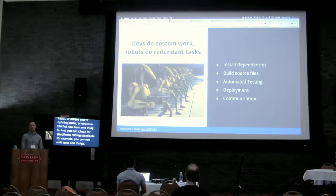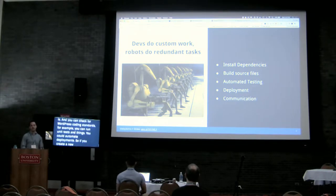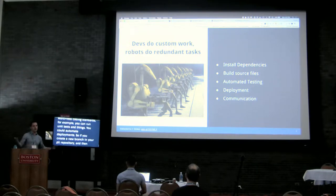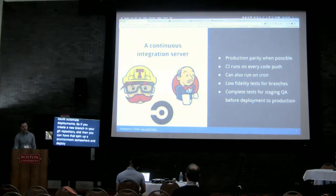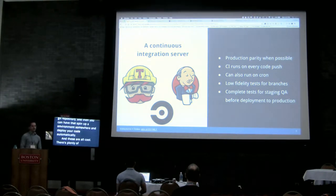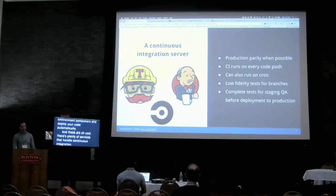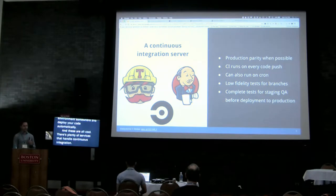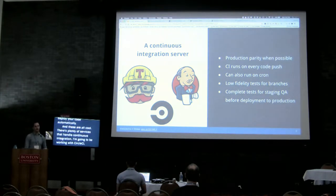You can run unit tests and things. You can also automate deployments — if you create a new branch in your Git repository, you can have that spin up an environment somewhere and deploy your code automatically. There are plenty of services that handle continuous integration. I'm going to be working with CircleCI, but there's a ton of alternatives, so I don't feel like you have to be locked into anything.